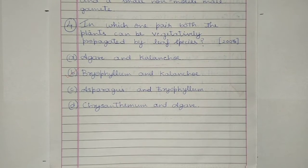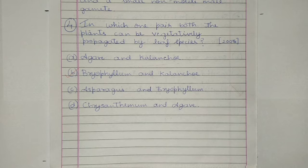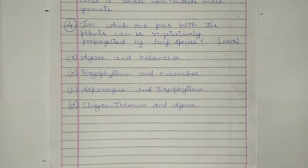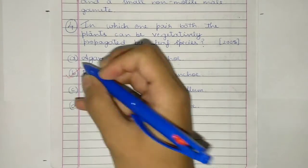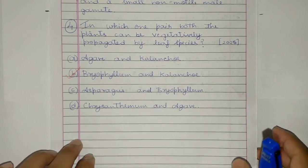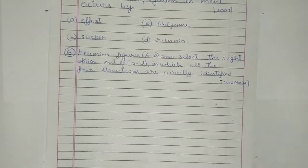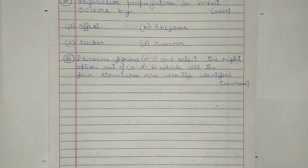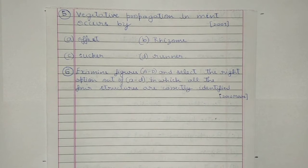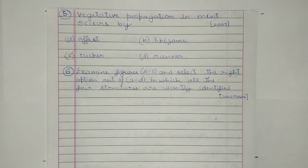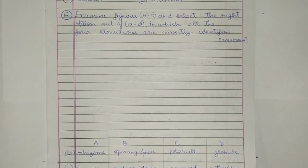Question 4. In which one pair can both plants be vegetatively propagated by leaf? a) Agave and Kalanchoe, b) Bryophyllum and Kalanchoe, c) Asparagus and Bryophyllum, or d) Chrysanthemum and Agave. The answer is option b. Question 5. Vegetative propagation in mint occurs by: a) offset, b) rhizome, c) sucker, or d) runner. The answer is c) sucker.